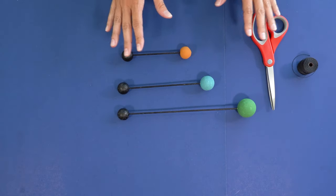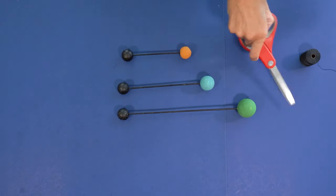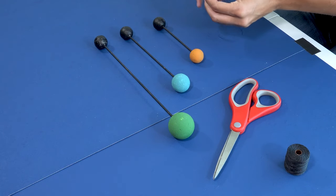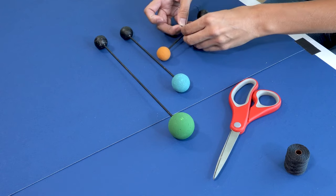After everything is dried, then we can start assembling. We're going to start by cutting a small piece of twine and we're going to attach it to the bottom one first. So you'll tie a small knot, make sure it's a double knot so it stays.